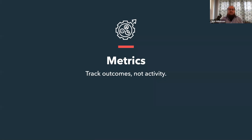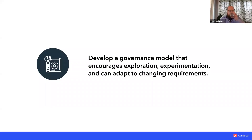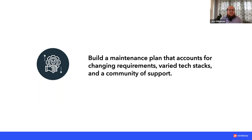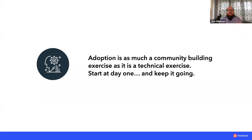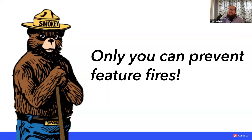Bringing it all together: to build a design system that works, you need to develop a governance model that encourages exploration, builds excitement, and gets teams ready to work collaboratively while adapting to changing requirements. You need to build a maintenance plan that accounts for changing requirements and every different tech stack and new technology. And finally, adoption is as much a community-building exercise as it is a technical exercise — start your adoption effort at day one and keep it going. The people you test the design system with become champions for it in the future. Only you can prevent future fires.